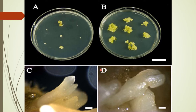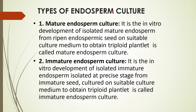Randaswamy and Rao successfully cultured immature endosperm of Santalum album up to callus. Endosperm culture is the in vitro development of isolated mature or immature endosperm from seed at a proper stage on a suitable culture medium to obtain triploid plantlets. There are two types: mature endosperm culture and immature endosperm culture.